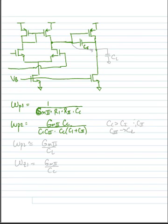And we could simplify this if cc is much greater than c1 and c2. And we assume that c2 is dominated by whatever the load capacitance is hooked to the circuit. So assume that we have a load capacitance, cl. Then we could say that omega p2 was approximately equal to gm2 divided by cl.